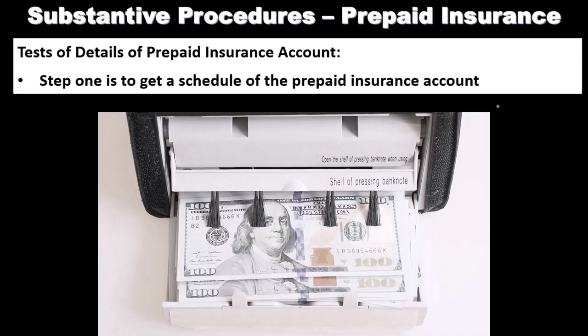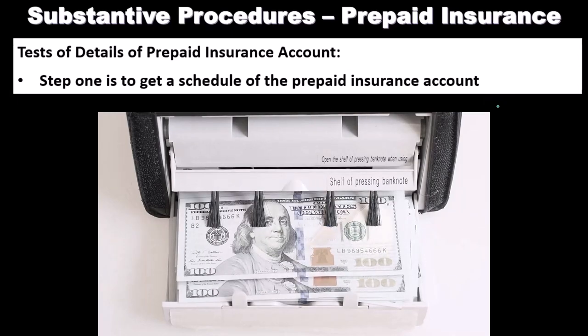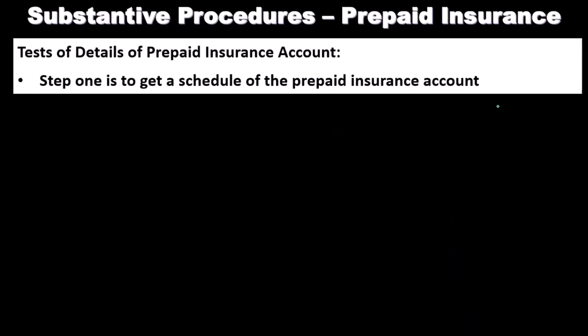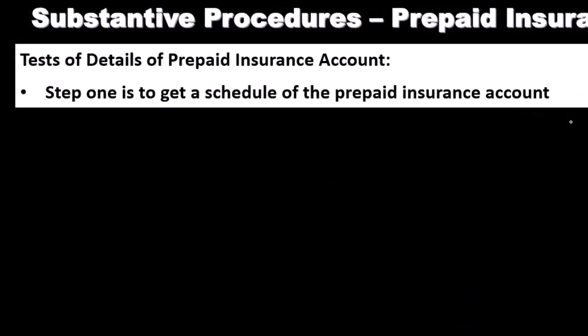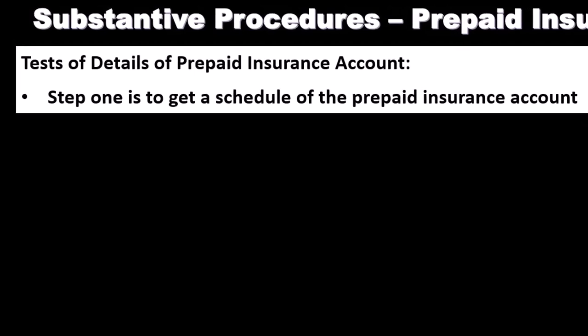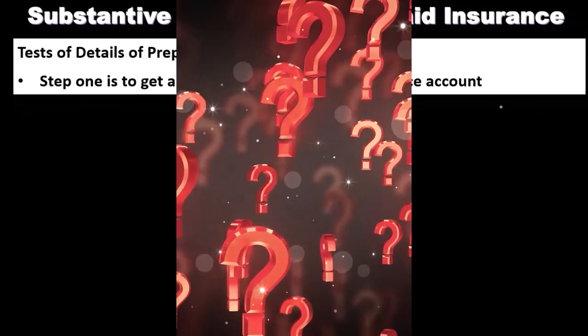Most of the time, the company will be posting their payments to the GL account of prepaid insurance. If they're a publicly traded company, they should be doing the month-end reconciliation, and we should basically just have to review that. If you have questions about that, think about the year-end adjusting entry in financial accounting.